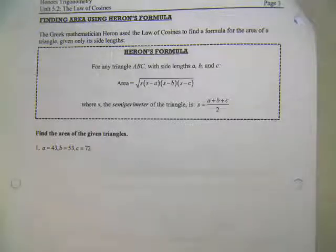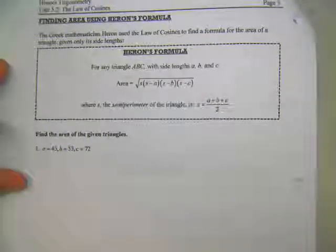Okay, so our last thing to do with the law of sines and cosines is another way to find area. This way is called using Heron's formula.